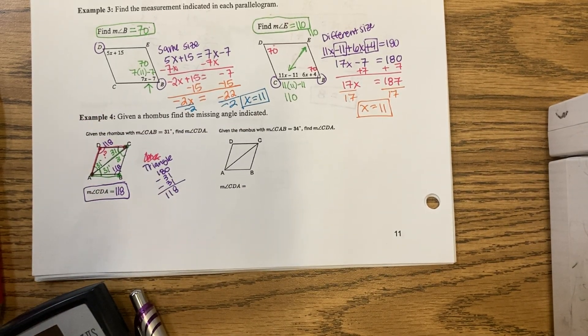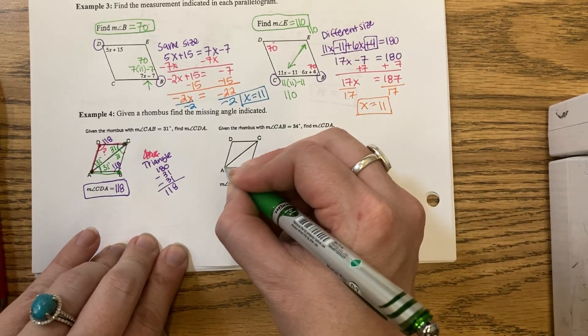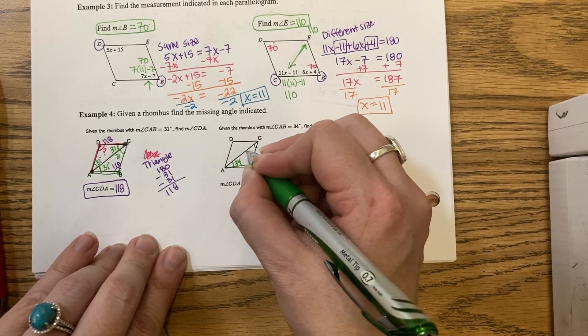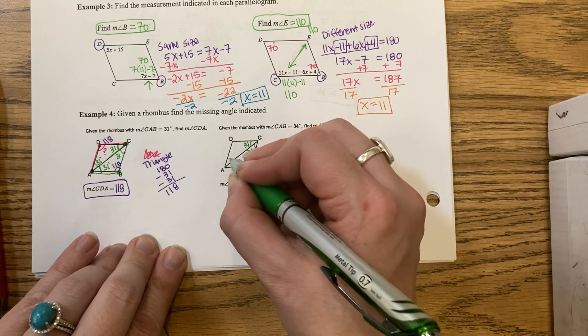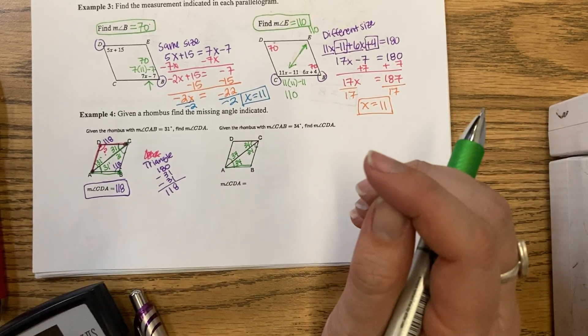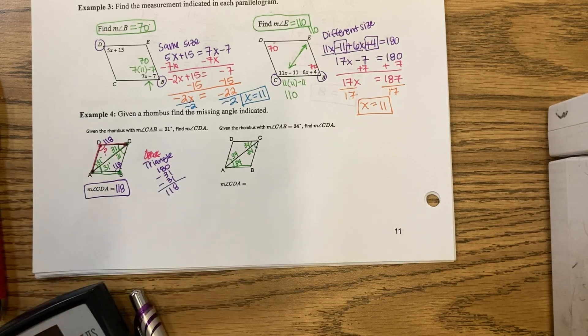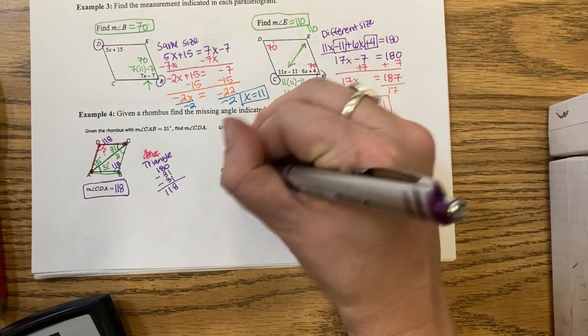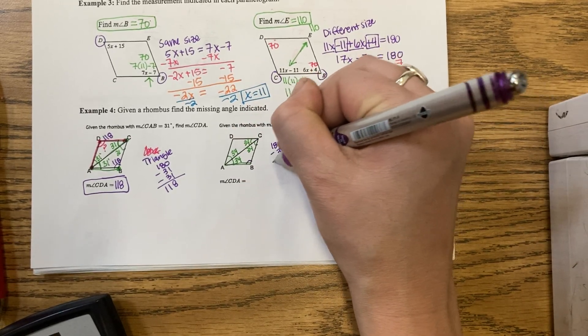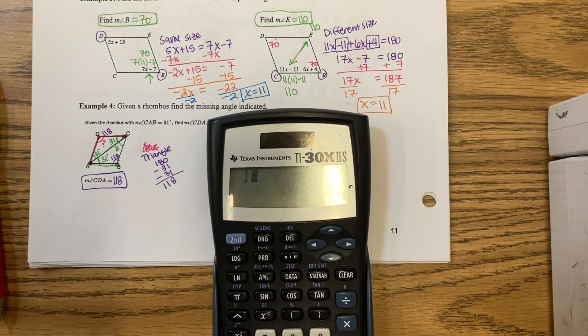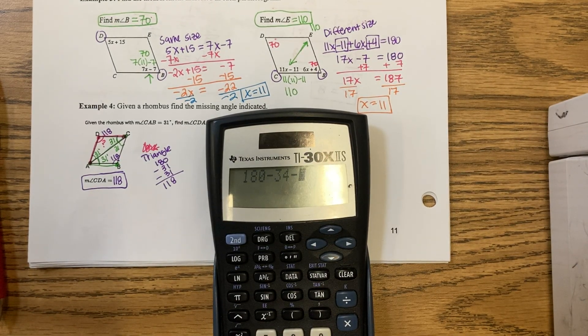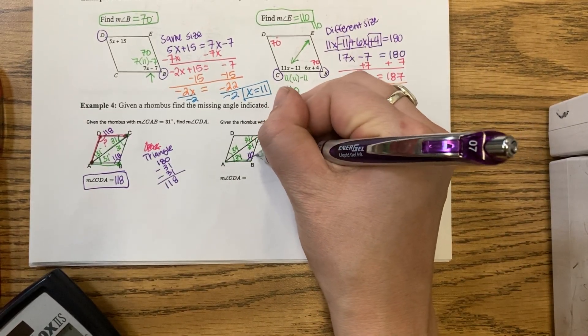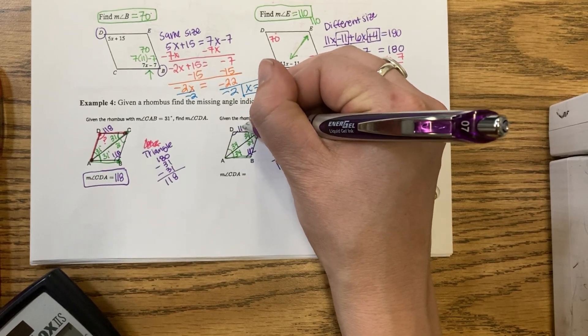Let's try the next one. CAB is 34. Then I can try and find this missing angle by saying 180 for the triangle, minus 34, minus 34. That's 112. If B is 112, then D is also 112.